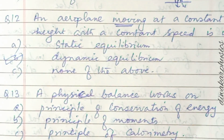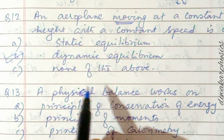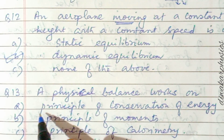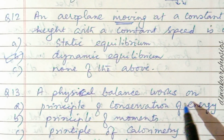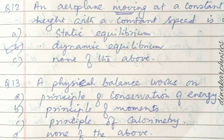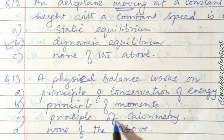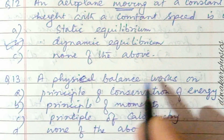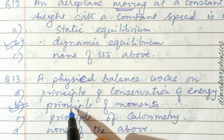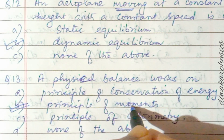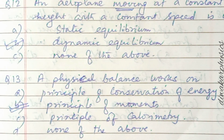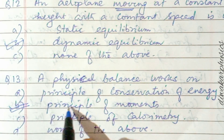Question thirteen: a physical balance works on — principle of conservation of energy, principle of moments, principle of calorimetry, or none of the above? A physical balance works on the principle of moments. This is one of the applications of the principle of moments. Answer is B.